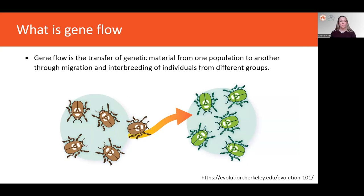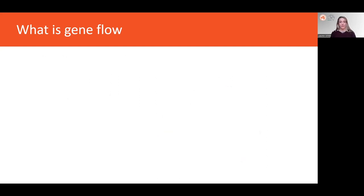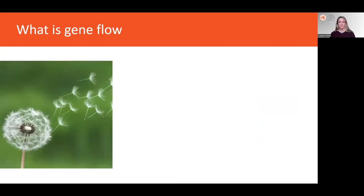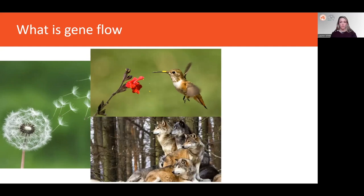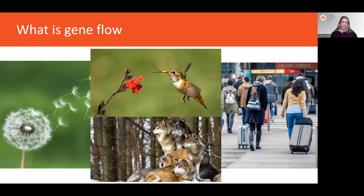Gene flow is the transfer of genetic material from one population to another through the migration and interbreeding of individuals from different groups. Gene flow includes lots of different kinds of events, such as pollen or seeds being blown to a new destination by the wind or carried to a new area by animals. Another example is when individuals of certain species leave the social group in which they were born to join a new group, or even when people move to new cities or countries.